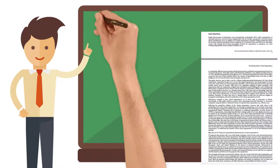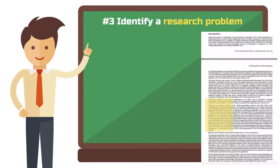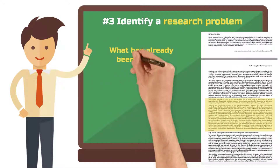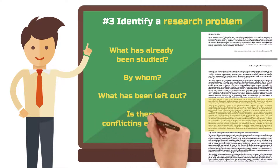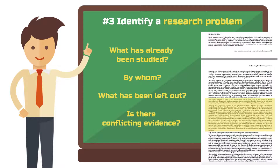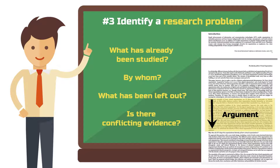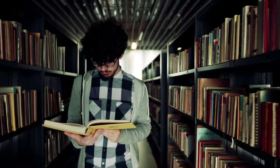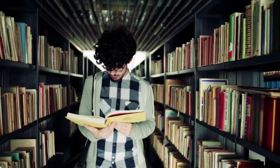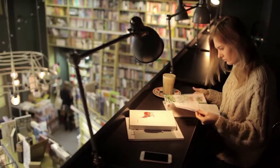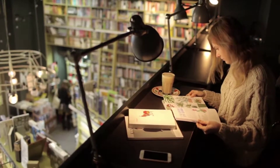Step 3: Identify a research problem. Which aspects of your topic have already been studied? By whom? What has been left out? Is there conflicting evidence? If you have carefully read the current research literature, you can identify a good research problem by answering those questions to yourself and then to the reader. In order to make a well-founded argument here, you must already have done a lot of reading, even though you are only at the beginning of your work. Please do not ever make the mistake of claiming that aspects X and Y of topic Z have not been researched so far, therefore I do it — this is not a good argument.